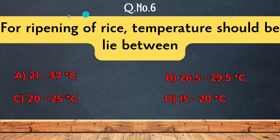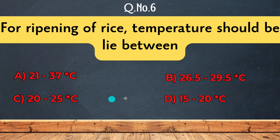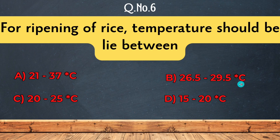Question 6: For ripening of rice, the temperature should lie between — 21 to 37 degrees centigrade, 20 to 25 degrees centigrade, 15 to 20 degrees centigrade, or 26.5 to 29.5 degrees centigrade. The correct answer is 20 to 25 degrees centigrade.